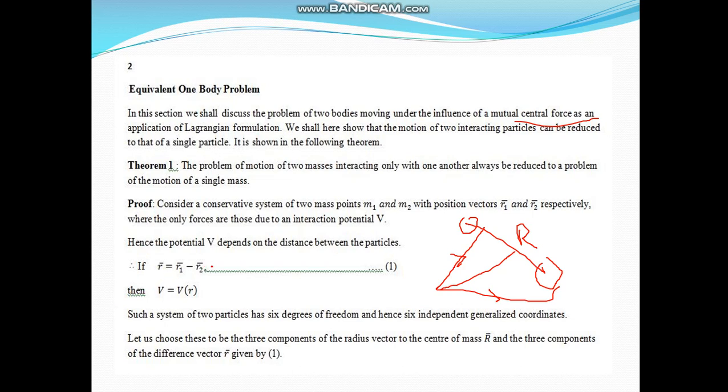The potential V depends on the distance between the particles. If r equals r1 minus r2, then potential energy V is a function of r. These two mass particles will have 6 degrees of freedom. Hence, 6 independent generalized coordinates. Let us choose these to be 3 components of radius vector to the center of mass R and the 3 components of the difference vector r given by equation 1.